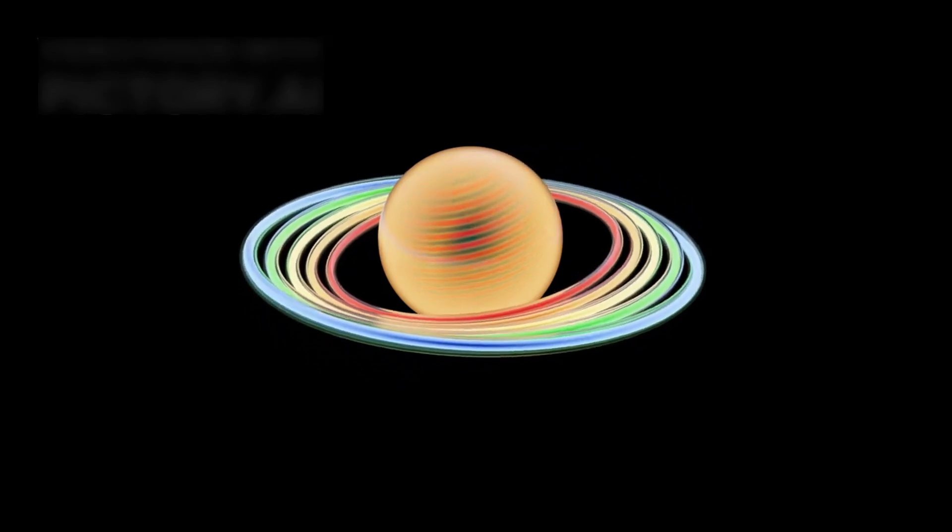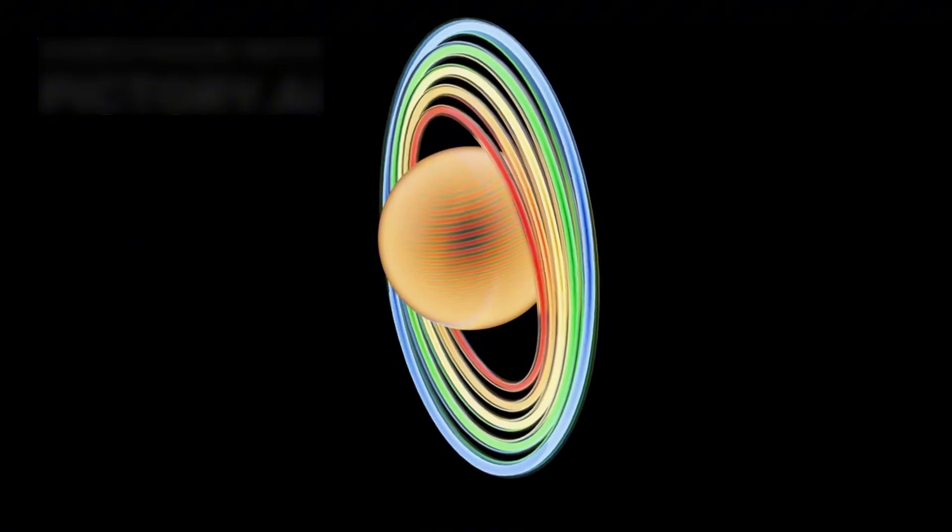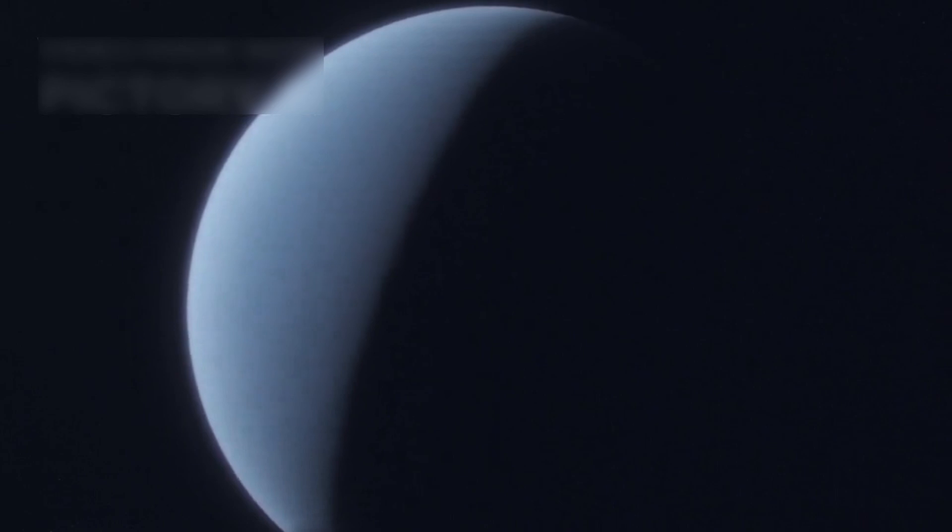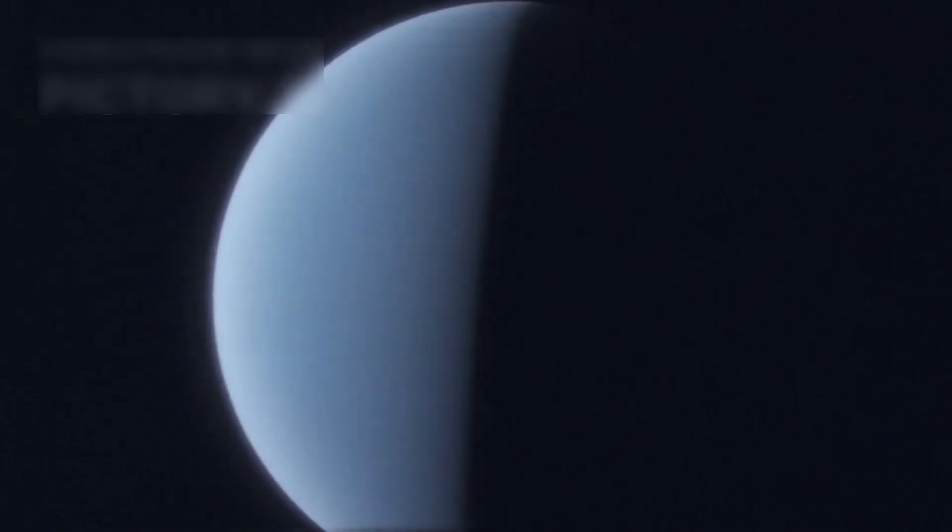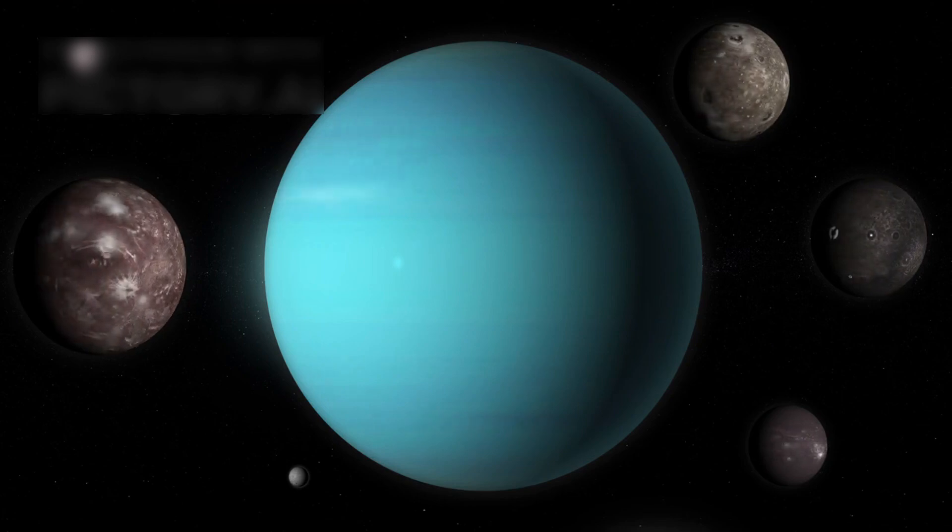Jupiter's thin rings, once overlooked, turned out to be intricate and dynamic, encircling the giant in colorful bands. Voyager 2's descent into the outer solar system opened a door into unknown planetary kingdoms. It found 10 new moons orbiting Uranus and identified their rocky surfaces and stormy environments.